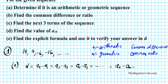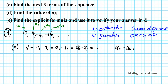Let's look at this sequence. A1 is the first term — the index tells you the position. We have A1 is 14, A2 is 4, A3 is negative 6, and A4 is negative 16. Let's apply the formula: A2 minus A1 — that's 4 minus 14, which equals negative 10.